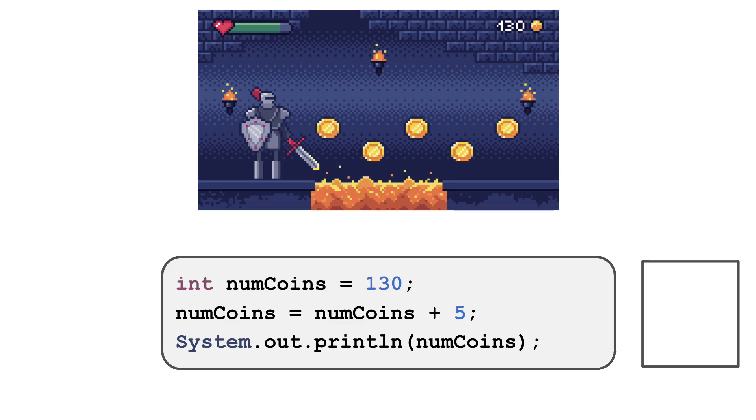Let's take a look at how a programmer might keep track of the number of coins a player has. The program starts by creating a variable to store the number of coins and assigning it an initial value of 130. Next the program assigns a new value to NumCoins.